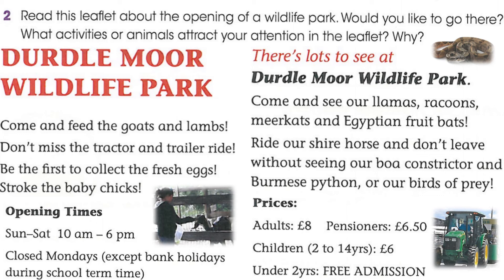I want all of you to read this silently and very carefully and to get every piece of information — every word, every sentence — because we are going to have some exercises and questions about it. For example, here you have the prices: for adults it's eight pounds, for pensioners — people who retired from their jobs — they pay less, six pounds fifty pence. So if I give you a problem like two adults and one pensioner, how much money would they pay? You multiply eight by two, then add six point five.